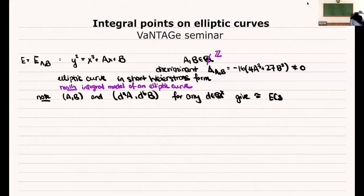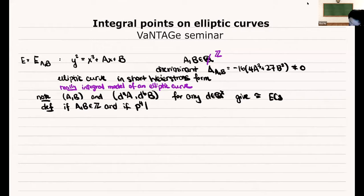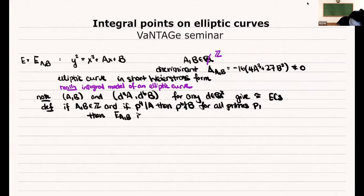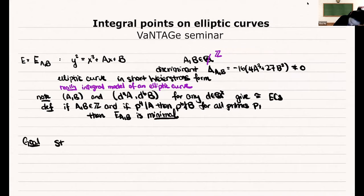Definition: if A and B are integers, and if p⁴ divides A implies p⁶ does not divide B, for all primes p, then this integral model is a minimal model. Our goal today is to study integral points on these models — I'll just say integral points on elliptic curves for simplicity.